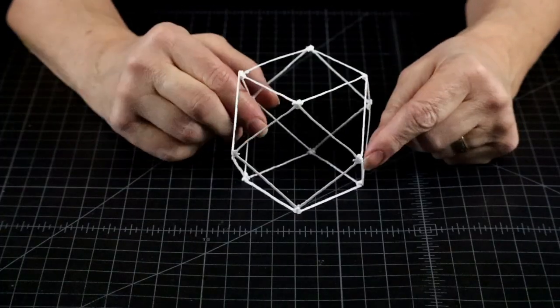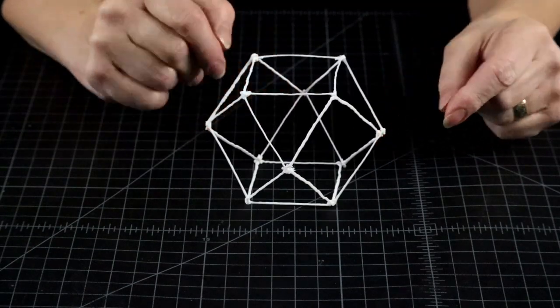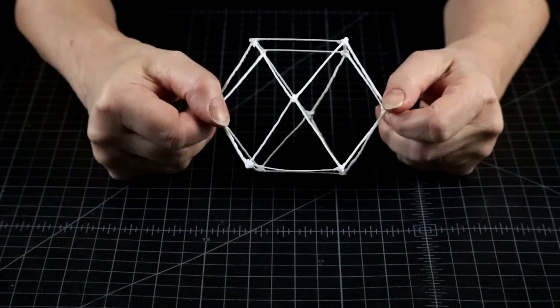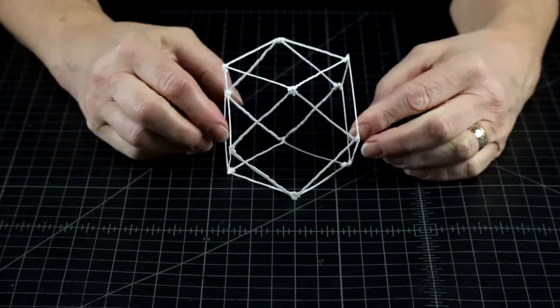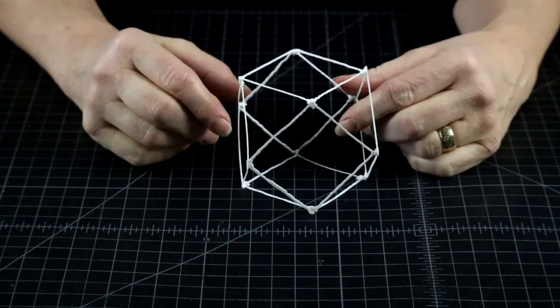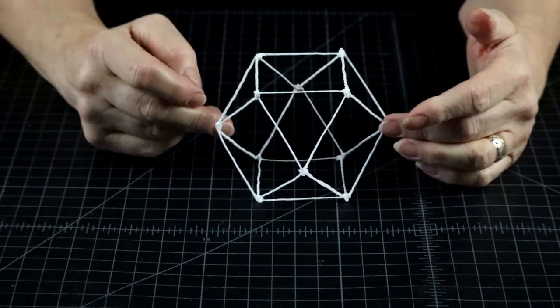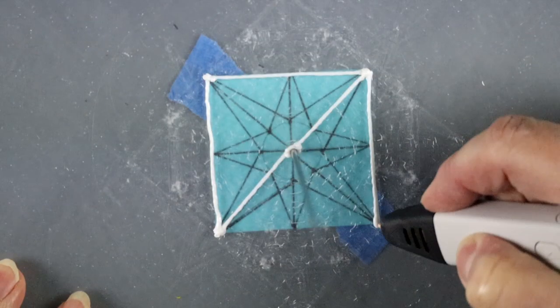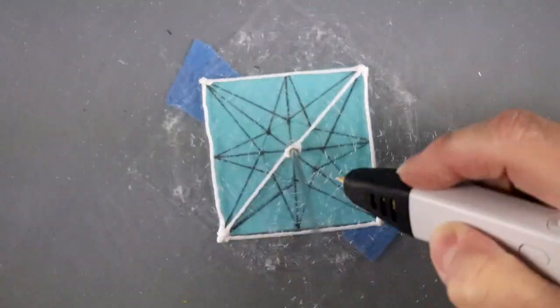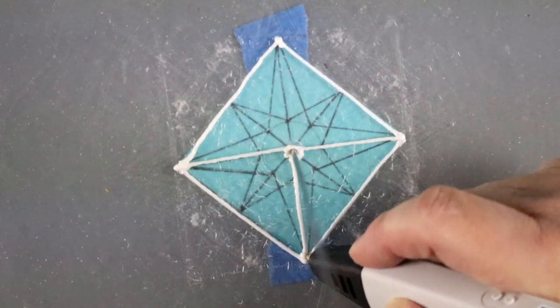You get a much smaller square sitting on one corner and really big triangles. This one looks so different that it got its own name: cube octahedron. This is the plain, minimalistic version of the cube octahedron.